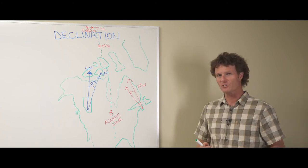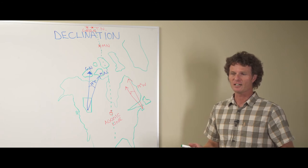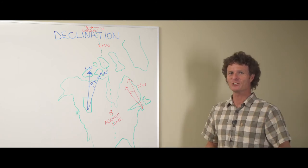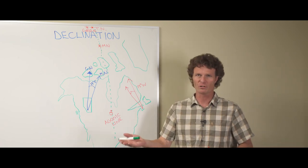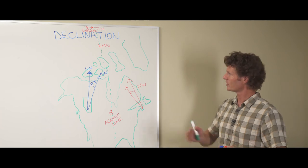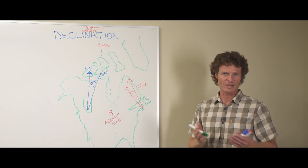Essentially, declination allows your compass and your map to speak together. Otherwise, they're speaking different languages. One speaks magnetic language, and the other speaks grid or map language. Understanding the declination and knowing what it is in your area will allow your map and compass to actually communicate.